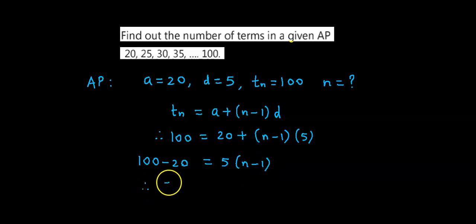Therefore, 5 times (n minus 1) is equal to 100 less 20, which is 80. So we have n minus 1 is equal to 80 divided by 5, which equals 16.